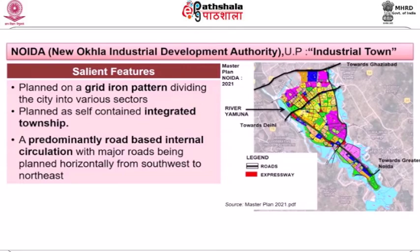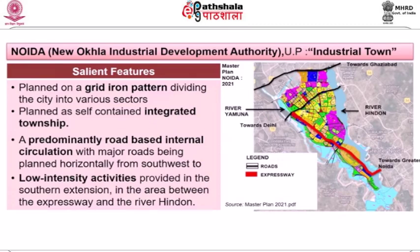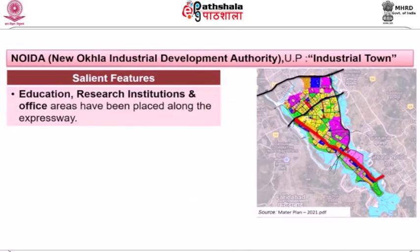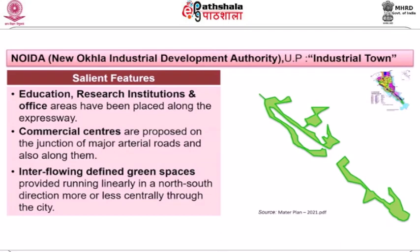The city was planned with predominantly road-based circulation, with major roads running from southwest to northeast. Low-intensity activities were planned in the southern extension, in the area between the expressway and the river Hindan. Education, research institutions, and office areas have been planned along the expressway. Commercial centers are proposed at junctions of major arterial roads and along them, with interflowing green areas running linearly in a north-south direction, more or less centrally through the city.